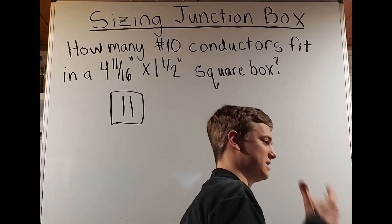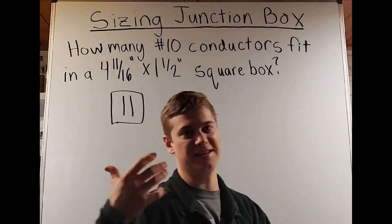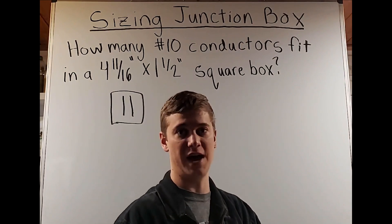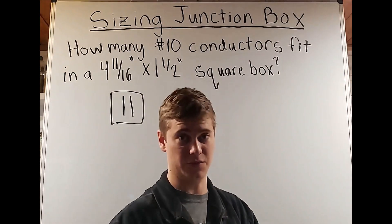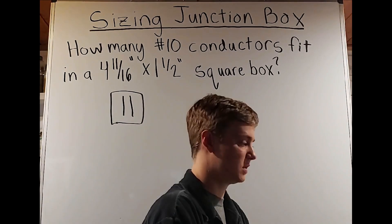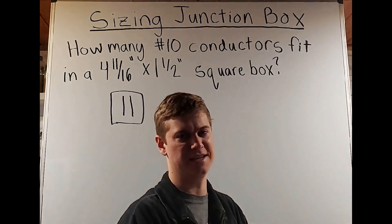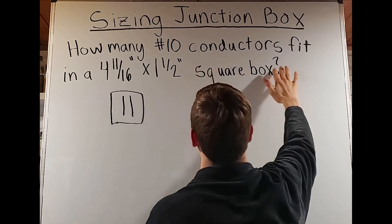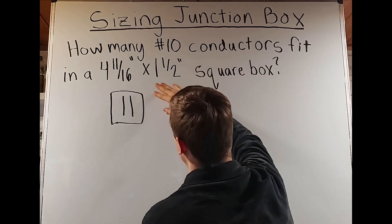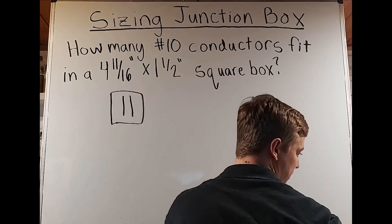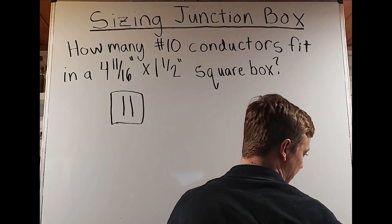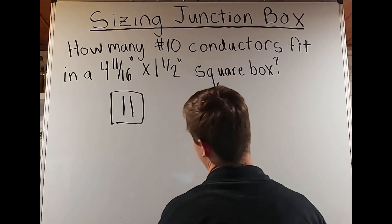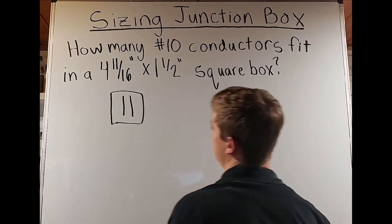You can compare this to using Annex C instead of Chapter 9 Table 5 and Table 4 to figure out your conduit fill — this table serves as a similarly efficient method. When you know the gauge of your wire and the size of the box, the table already tells you how many conductors of that size will fit in that box. This will come in handy for some other things as well.